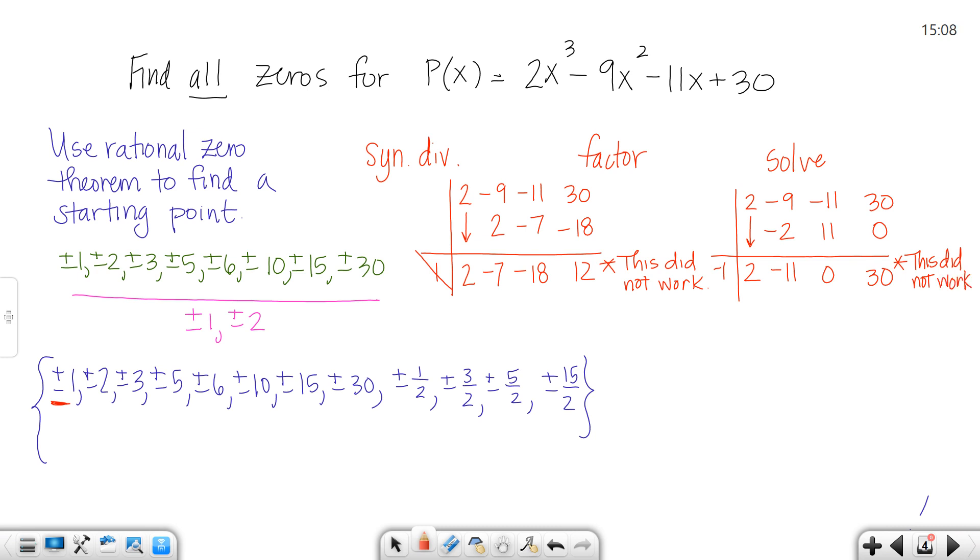Keeping going down the list. I tried 1 and negative 1. Let's try negative 2. Just keep going down the list until you find one that works. Starting back over, I'm going to try negative 2.